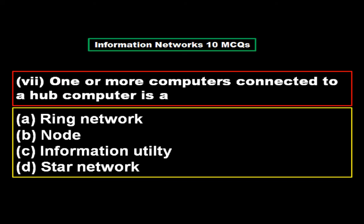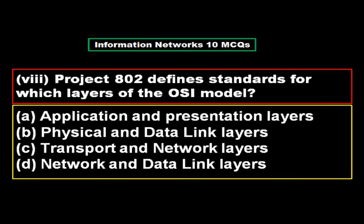One or more computers connected to a hub computer is: option A ring network, option B node, option C information utility, option D star network. The right answer is option D, star network.